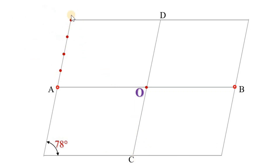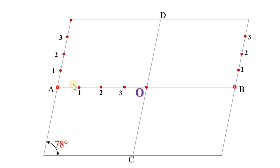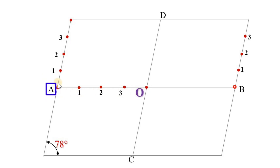Now divide this line into 4 equal parts — you can divide it into 5 or 6 equal parts also. Similarly, here are 4 equal divisions. Divide this distance into 4 equal parts as well, since it must match. Your numbering should be in ascending order from A to the right side. Similarly, your numbering is in ascending order from point A in the upper direction.